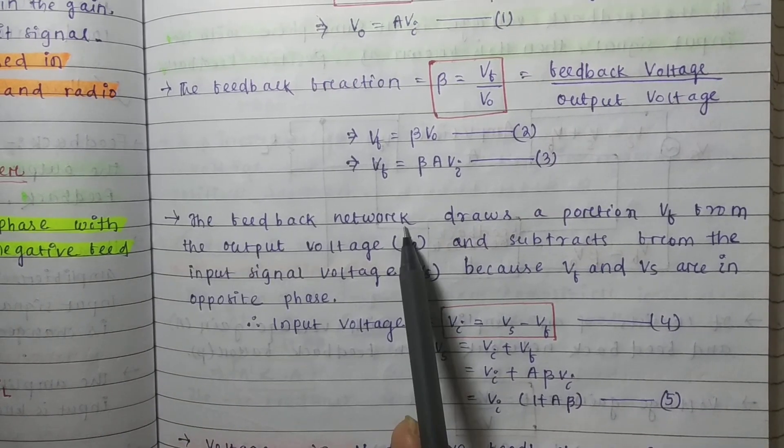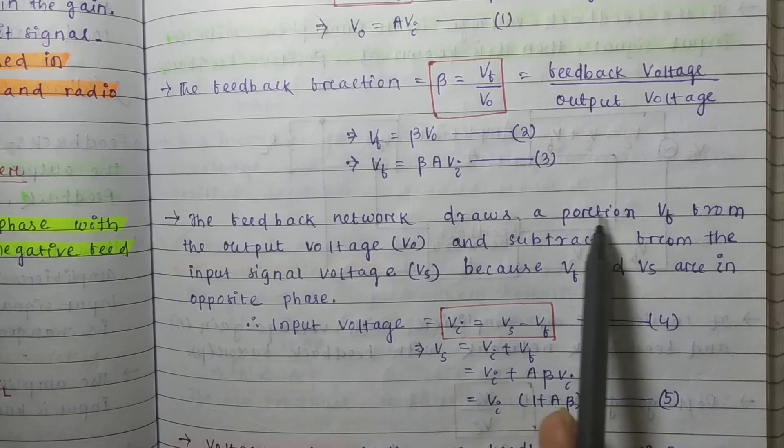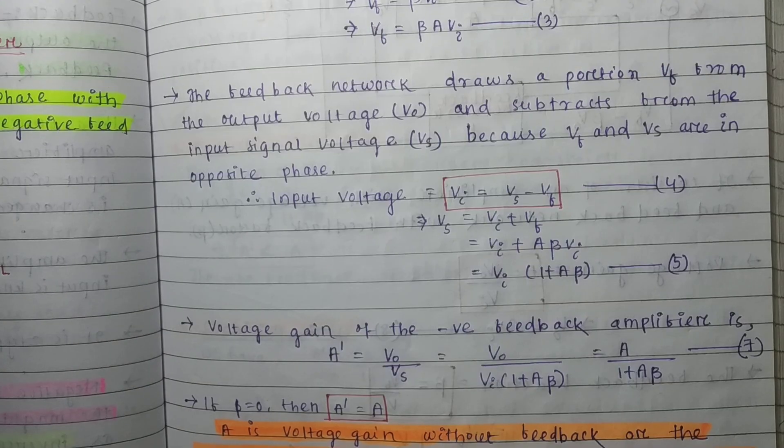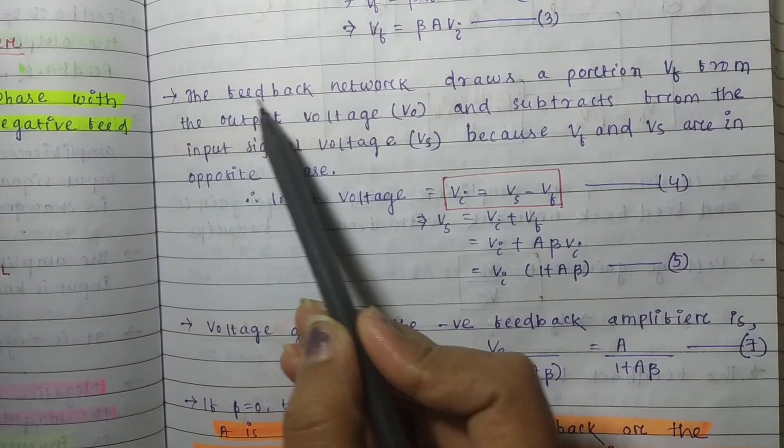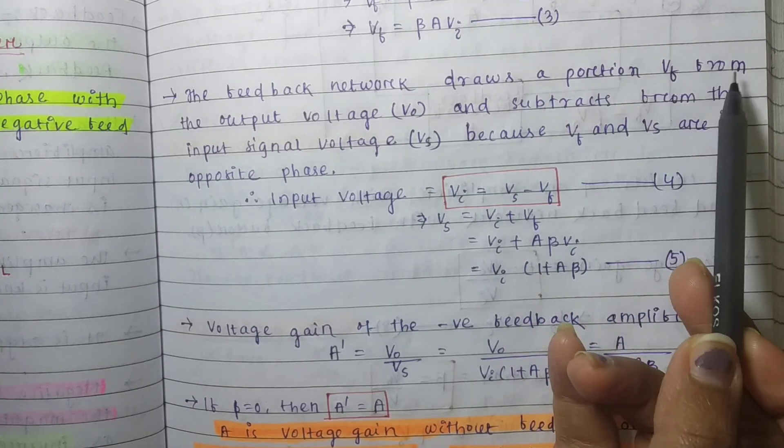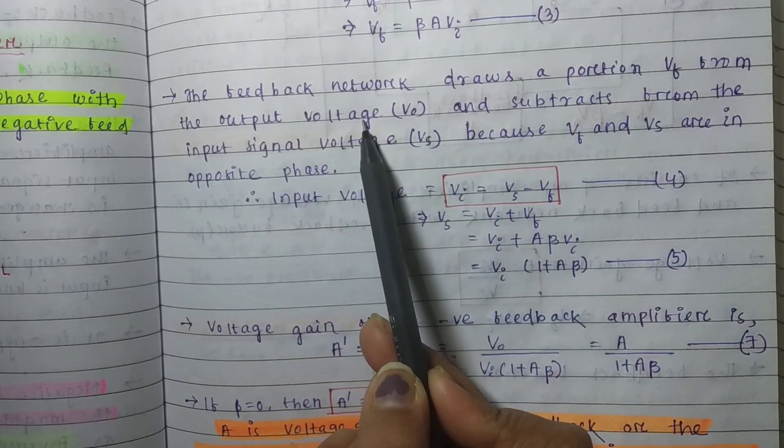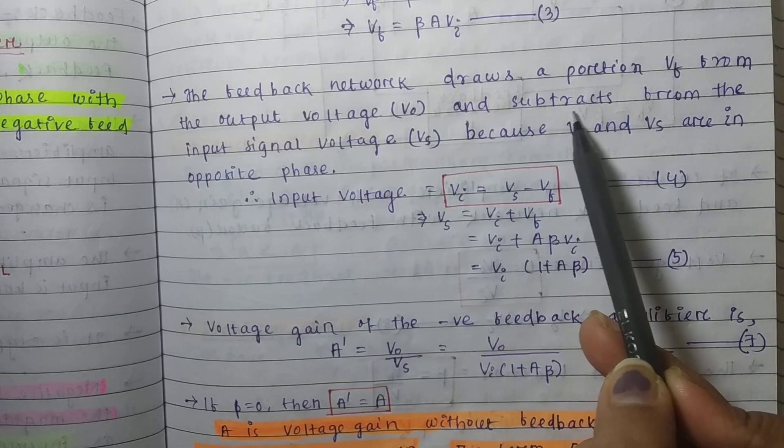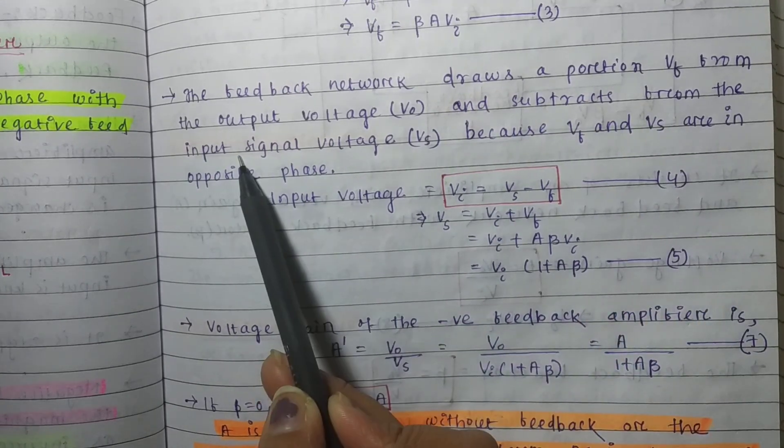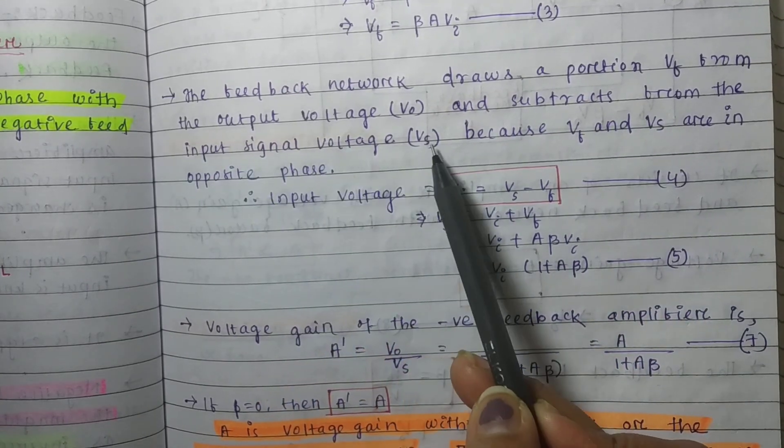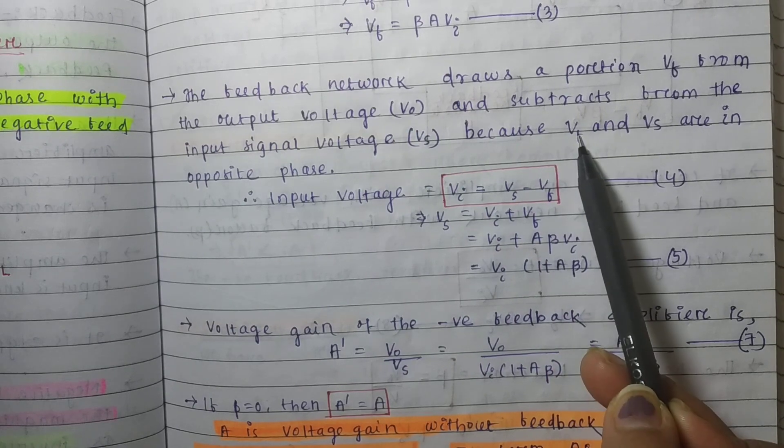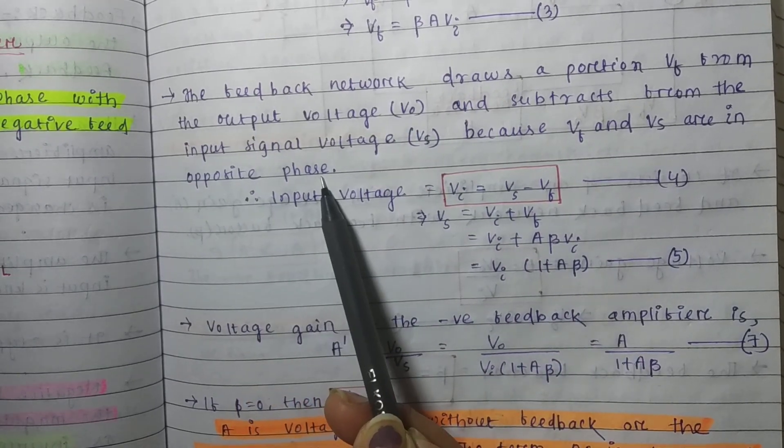The feedback network draws a portion Vf from the output voltage Vo and subtracts from the input signal voltage Vs, because Vf and Vs are in opposite phase.